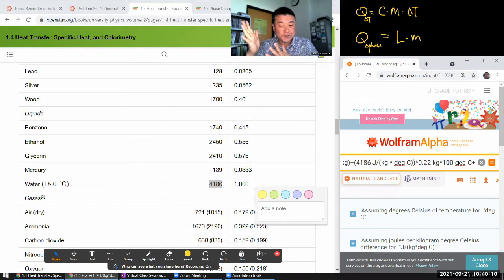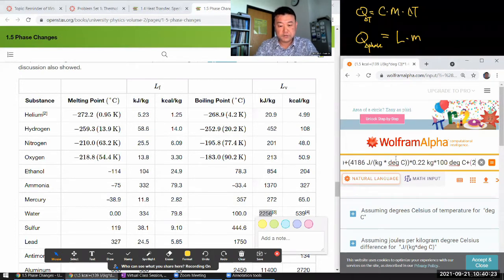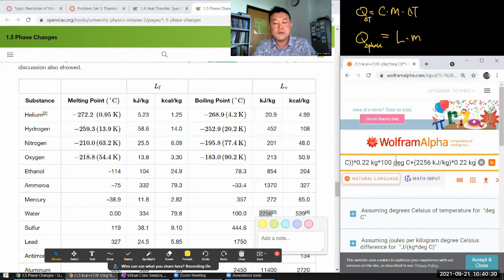And then now water is going to boil. There's a latent heat of vaporization of water: 2256 kilojoule per kilogram. So I need 2256 kilojoule per kilogram times same mass, 0.22 kilogram. Now all the water is water vapor.